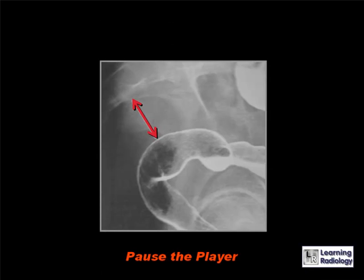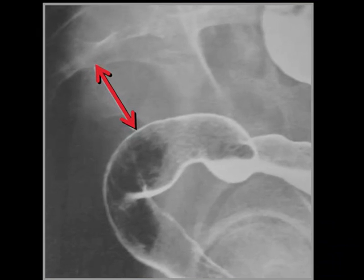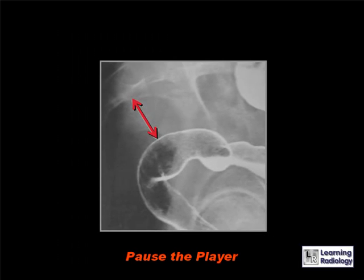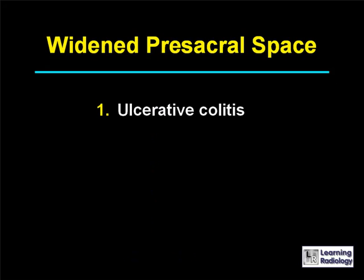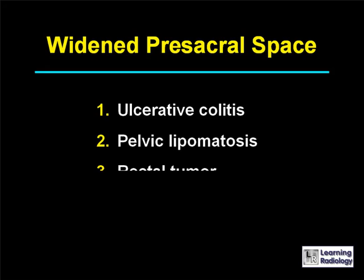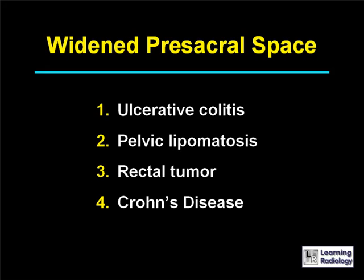The differential is for a widened presacral space. There are five causes: ulcerative colitis, pelvic lipomatosis, a rectal tumor, Crohn's disease, and a sacral tumor.